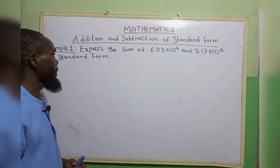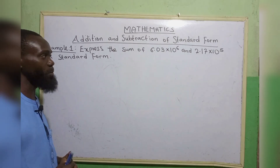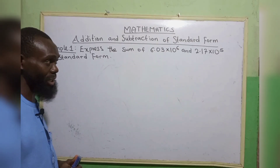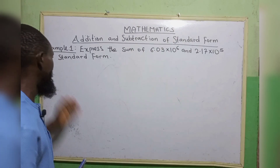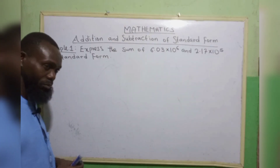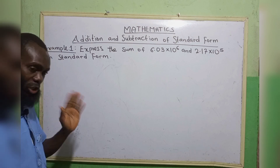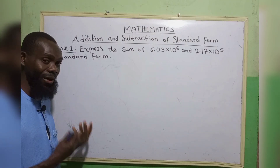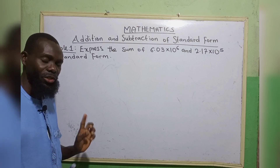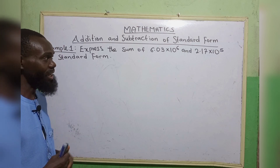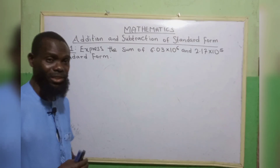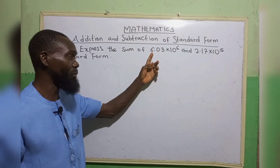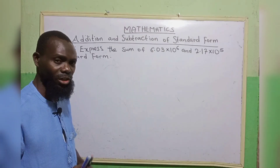Example 1: express the sum of 6.03 times 10 to the power 6 and 2.17 times 10 to the power 5 in standard form. If you could recall some certain rules that we did in our last class — the first one is, in standard form, to express any number in standard form, your decimal point has to be at the back of the first non-zero digit.